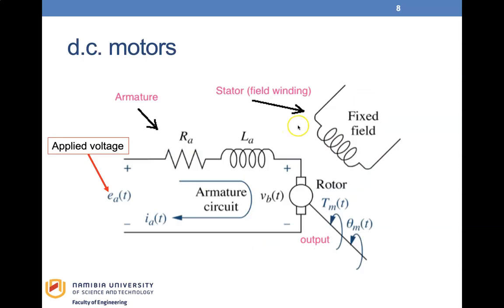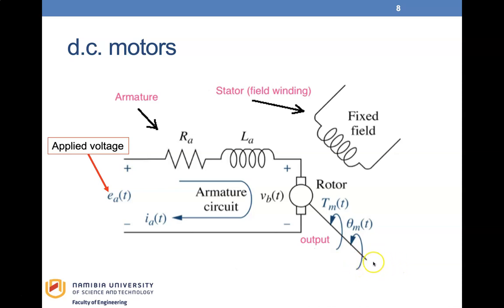This is a DC motor arrangement. This is the armature side — the circuit that actually rotates — and there is a shaft connected to it. From that shaft you have your rotor, and from the output you can make use of the torque generated by the motor to drive any other machine: a pump, a toy, a car — different types of applications.